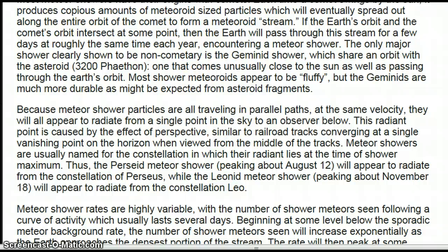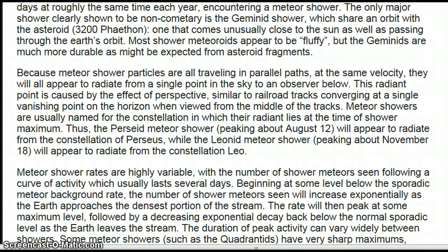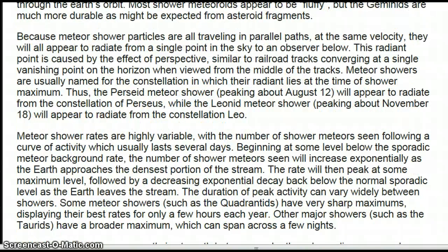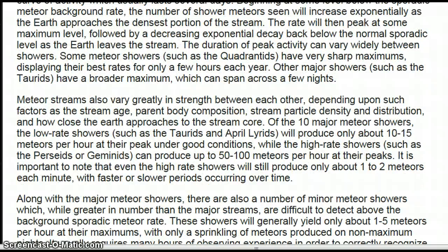Because meteor shower particles are all traveling in parallel paths at the same velocity, they will all appear to radiate from a single point in the sky to an observer below. This radiant point is caused by the effect of perspective. The Perseid meteor shower, peaking about August 12th, will appear to radiate from the constellation of Perseus, while the Leonid meteor shower, peaking around November 18th, will appear to radiate from the constellation Leo. Meteor shower rates are highly variable, with the number of shower meteors seen following a curve of activity which usually lasts several days. Meteor streams also vary greatly in strength depending on factors such as stream age, the parent body composition, stream particle density and distribution, and how close the Earth approaches to the stream core.